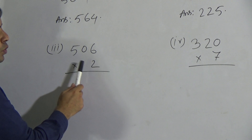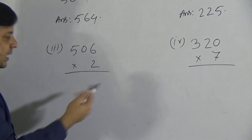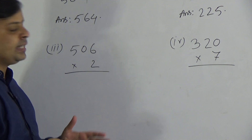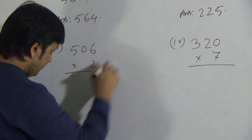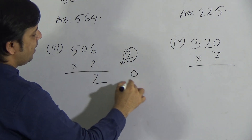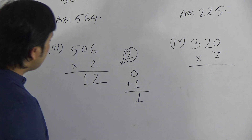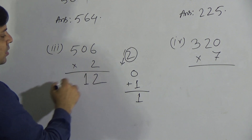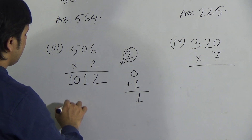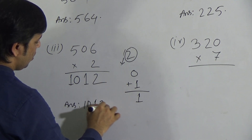We will now solve the third question. We have to multiply 506 by 2. First we multiply the 1's place: 6 by 2. Say the times table of 2 up to 6: 2 0's are 0, 2 1's are 2, 2 2's are 4, 2 3's are 6, 2 4's are 8, 2 5's are 10, 2 6's are 12. We write 2 in the 1's place and carry 1. Next digit is 0: 2 0's are 0 plus carrying 1 gives 1. Then next digit is 5: 2 5's are 10, and as there is no remaining digit on the left side, we write 10. So the answer of question 3 is 1012.